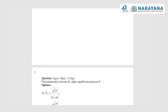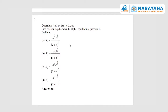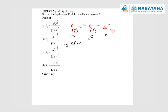Next question is related to equilibrium. An equilibrium is given: A ⇌ B + ½C. It is a homogeneous equilibrium and all components — reactants and products — are in the gaseous state. We need to find the relationship between equilibrium constant Kp, degree of dissociation alpha, and equilibrium pressure P. Initially we have 'a' moles of A, 0 moles of B and C. At equilibrium: A has a(1−α), B has aα, and C has aα/2. The total number of moles becomes a(1 + α/2).